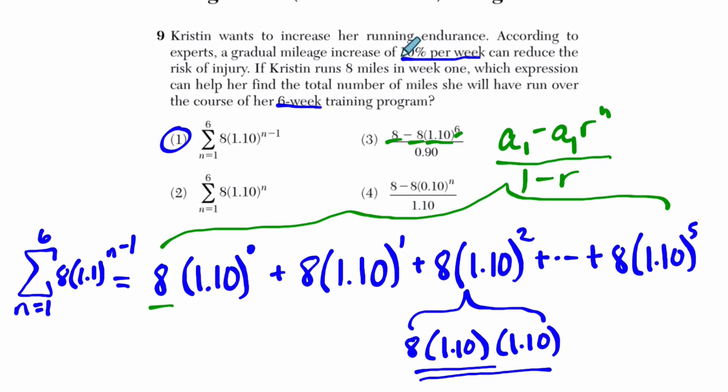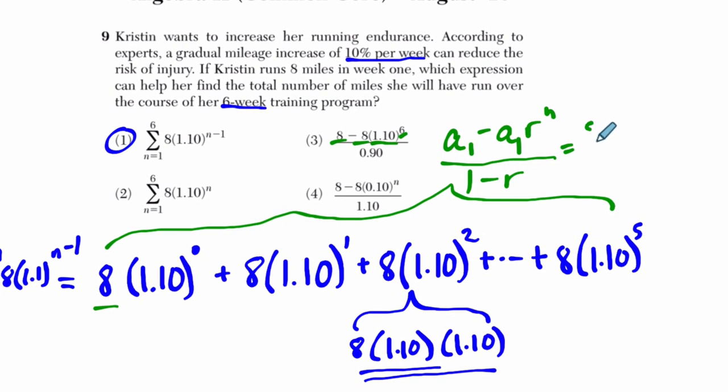They got me. I did 1 minus 10%, which is 0.9, but it's really 1 minus 1.1. This would be correct if it said negative 0.1 down here. So the way it should be written is 8 minus 8 times 1.1 to the 6th over 1 minus 1.1. And that's just negative 0.1. If that was written there, that would be correct, but this is otherwise wrong.